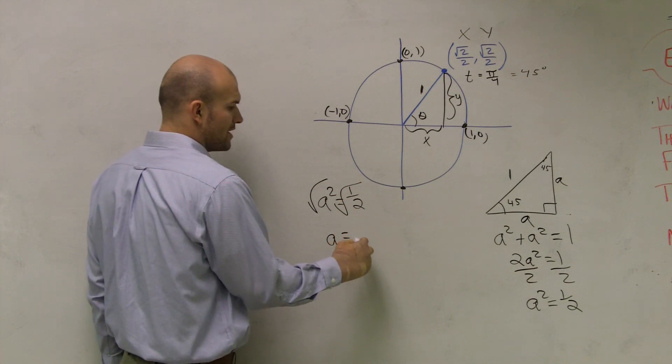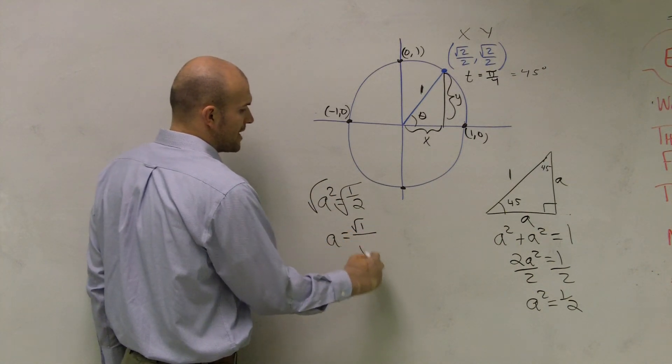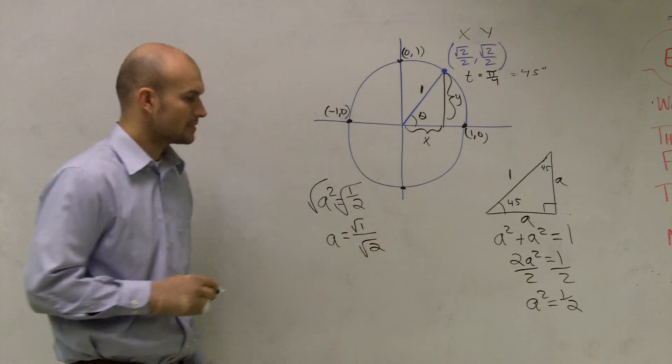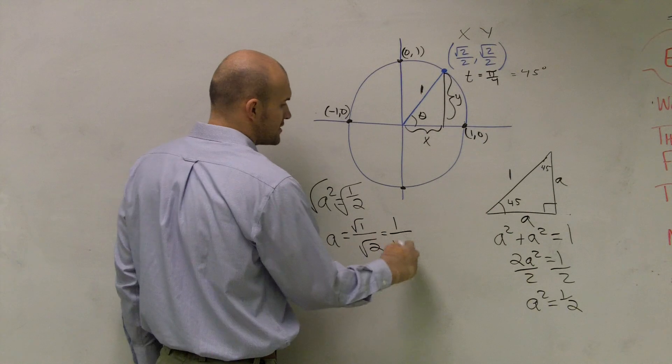Now A equals the square root of 1 half. I can rewrite the square root as the square root of 1 divided by the square root of 2. The square root of 1 is going to equal 1 over the square root of 2.